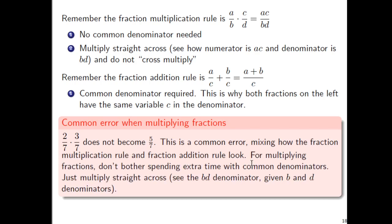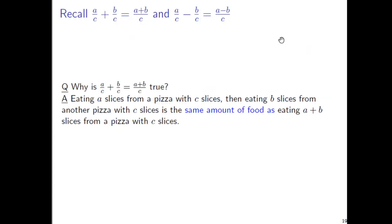For multiplying fractions, please don't spend any extra time with common denominators. It leads to errors. Just multiply straight across. The formula is simply saying: take the first denominator B, write it there; the second denominator D, write it right there. Just write the things next to each other. That's your fraction multiplication rule.